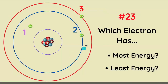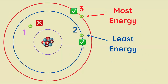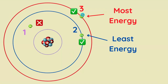Which electron has the most energy? Which one has the least energy? The closer it is to the nucleus, the lower the energy. But even though this electron is closest to the nucleus, it's not occupying a shell, so it's not actually part of the atom. So two has the least energy, and three has the most.